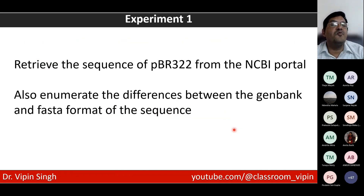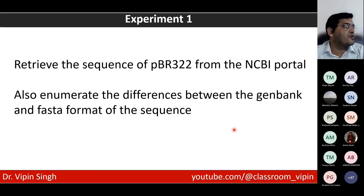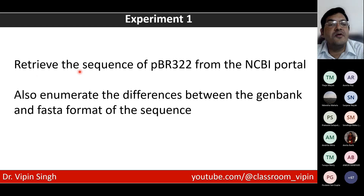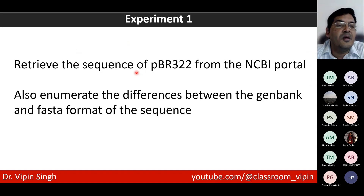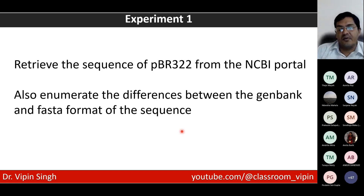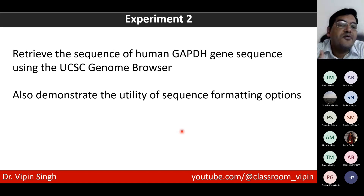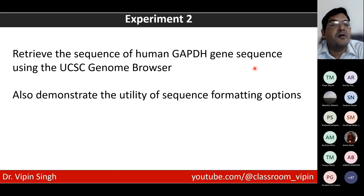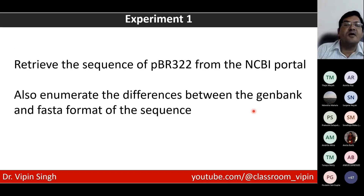So with this now, we can move to experiments. We will do simple experiments today and take this forward tomorrow with furthermore experiments. The first is what we're going to do is retrieve the sequence for PBR322 from the NCBI portal and read the differences between the GenBank and the FASTA format of the sequence. Second, I'll also introduce you to the UCSC Genome Browser, where we are going to retrieve the sequence of the human GAPDH gene and demonstrate the utility of sequence formatting options. Let's go to the first experiment — we are going to retrieve the sequence of PBR322 from the NCBI portal.